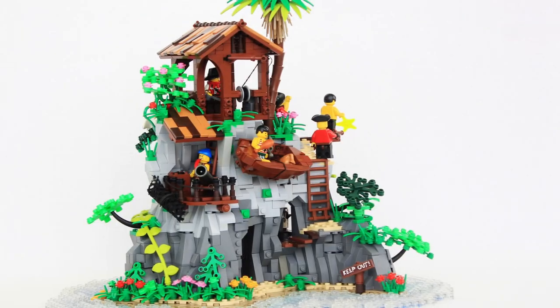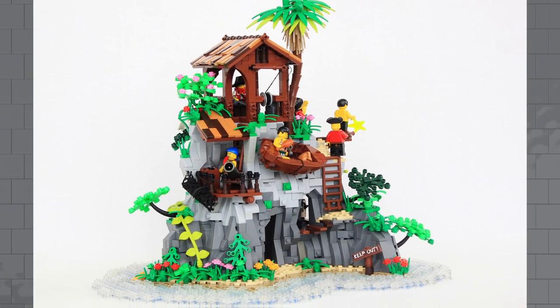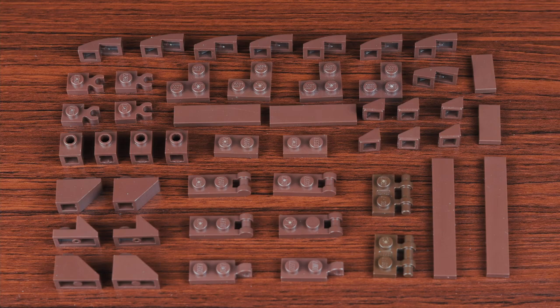In this video, we'll walk through step-by-step how to make a small LEGO rowboat, or if you want, you can also add a sail and make it a small sailboat. These are the parts you'll need.